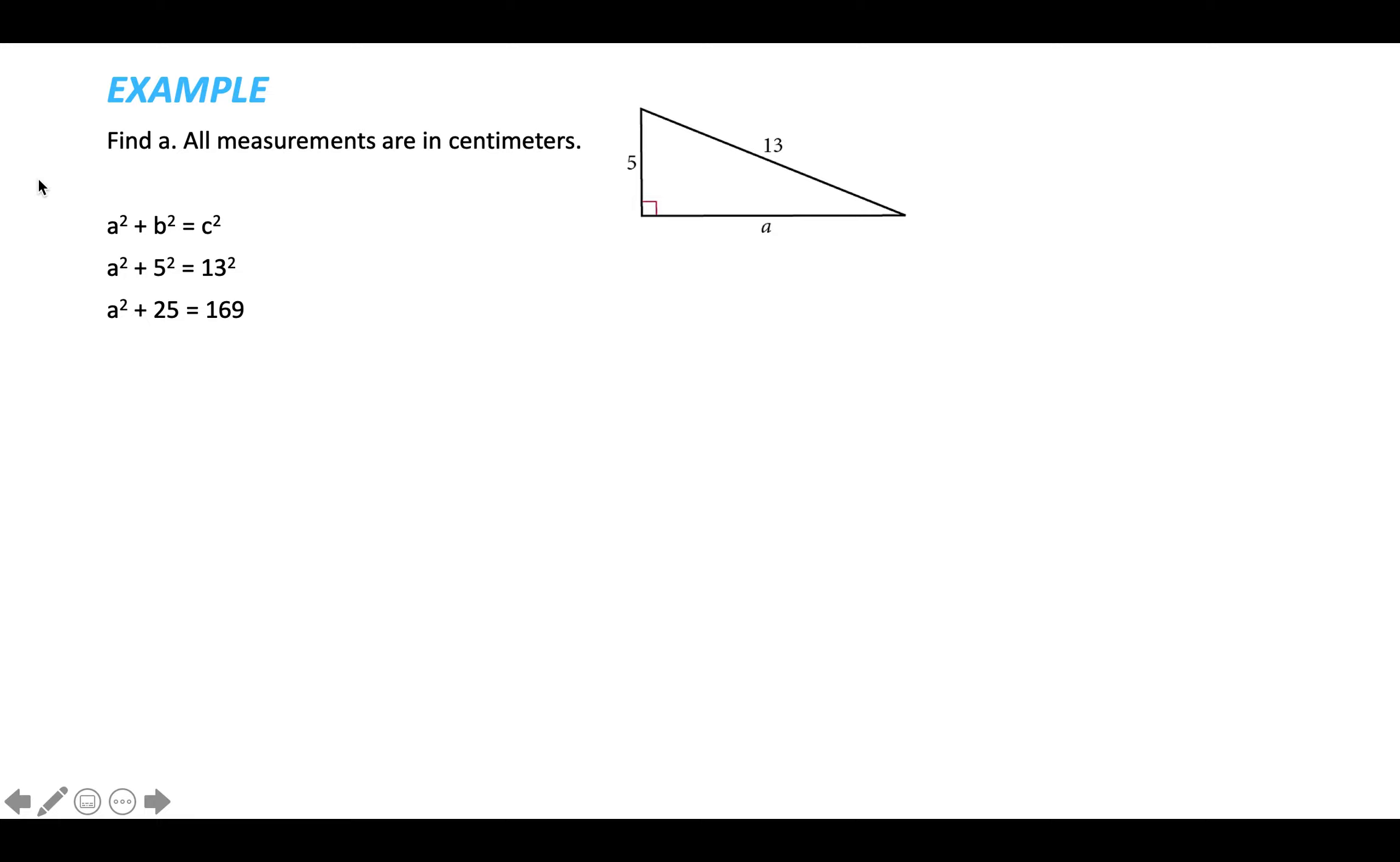5 squared is 25, 13 squared is 169, so that's how I come up with that next step. If we subtract 25 on both sides, we get that A squared is equal to 144, and so then if you have A squared and you want to get just A, you have to square root both sides. The square root of 144 is 12 because 12 times 12 is 144, so we know that A, that side length is 12 centimeters.